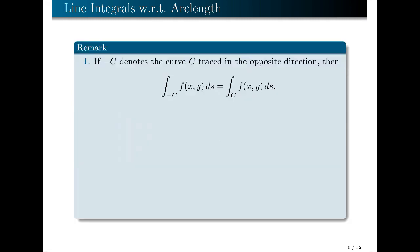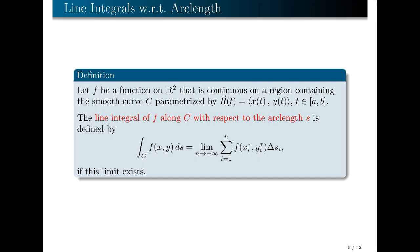We continue with the following remark. If −c denotes the curve c oriented in the opposite direction, then the line integral along −c of f(x, y) with respect to arc length s is just the same as the line integral along the original curve c of f(x, y) ds. This fact can be observed from the definition: Δsᵢ, which is the length of the i-th sub-arc, does not depend on the orientation of your curve c.